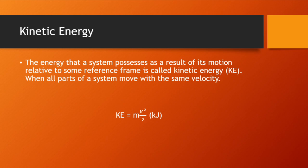Kinetic energy, on a mass basis, is equals to mass times velocity squared over 2, with units of kilojoules.